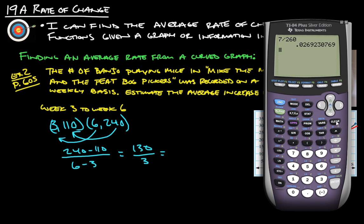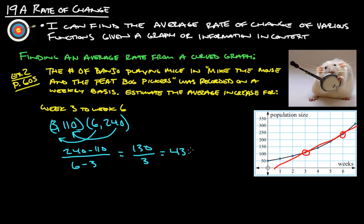130 divided by three gives us 43.3. So that means there is an increase of 43.3 new mice per week.